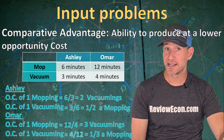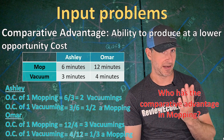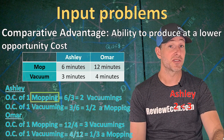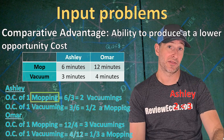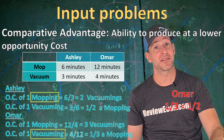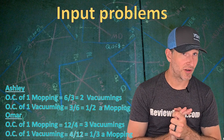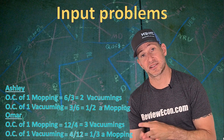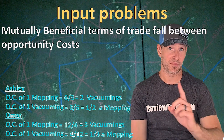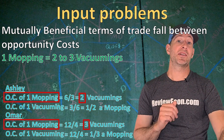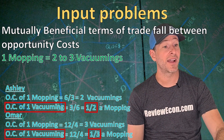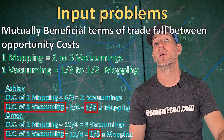Comparative Advantage is the ability to produce something at a lower opportunity cost. Ashley has the comparative advantage in mopping because losing two vacuumings is a lower opportunity cost than losing three vacuumings. Since one third is less than one half, Omar has the comparative advantage in vacuuming. Ashley specializes in mopping and Omar in vacuuming, and they can trade services. Mutually beneficial terms for mopping fall between two and three vacuumings; for vacuuming, between one third and one half of a mopping.